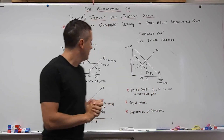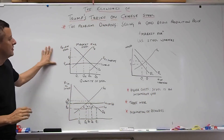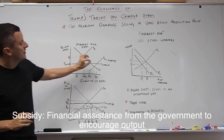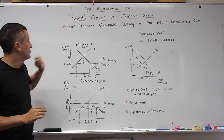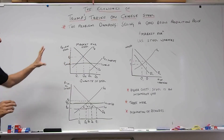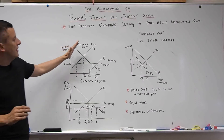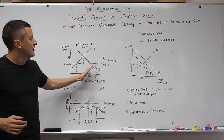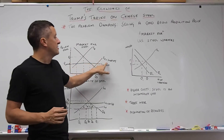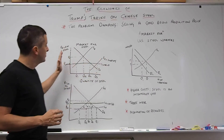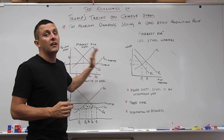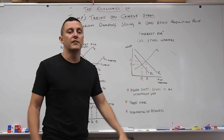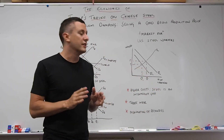If we look at this diagram here, the market for steel — this is a subsidy diagram with our classic S-World curve. We've got the market for steel, the domestic supply in China, and the supply of steel produced in China with a subsidy. Note this is a very, very large subsidy, and therefore they're able to push steel onto the international market at a very, very low price.